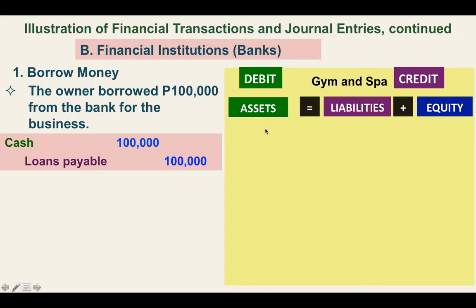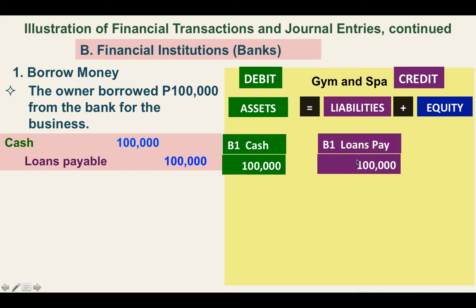Reflecting this transaction in our accounting equation for the gym and spa — labeled B1 (financial institution, borrowed money): we debit cash, increasing cash, and credit liability, increasing liability by $100,000. There is an increase in cash, which is an increase in assets, and an increase in liabilities. Both sides of the equation have an increase.